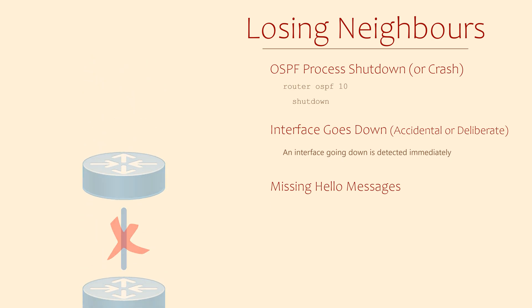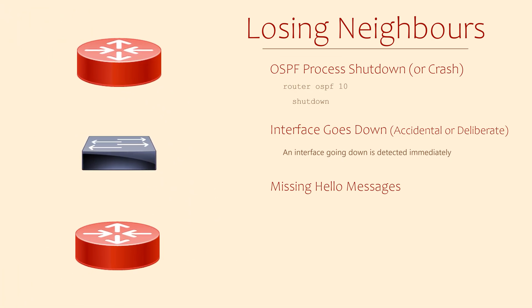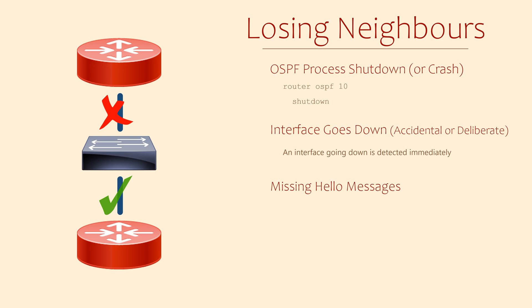What if the two routers aren't directly connected? Consider this example: these two routers are neighbors but they connect through a switch. If a link were to fail, the top router would detect this immediately as its interface goes down and will tear down its neighbor relationship. The bottom router however won't immediately detect the failure, as the link between itself and the switch is still up. It would be the same if the top router died or rebooted — the bottom router wouldn't immediately know. If a router thinks there's a valid path when there isn't, it could forward traffic off to its doom.